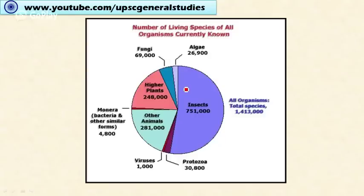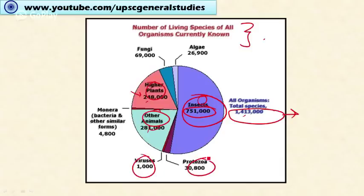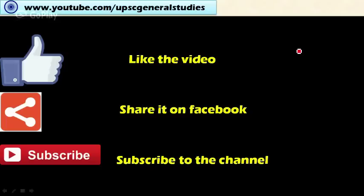Looking at the number of living species of all organisms currently known — these are only recorded species — more than 50 percent of species are insects. Out of a total of 1,413,000 species, 751,000 belong to insects. Higher plants account for 248,000 species. Other animals include 81,000; viruses 1,000; protozoans 30,800; algae 26,900; and fungi 69,000. There are infinite species not yet recorded by the scientific community that must be catalogued before they undergo extinction due to human interference.